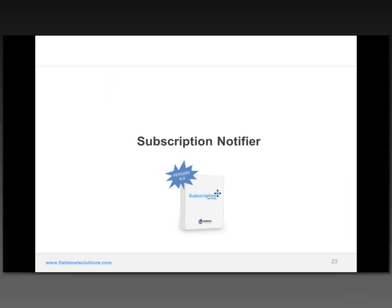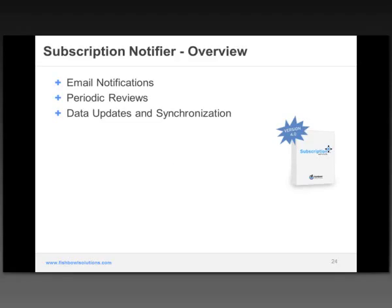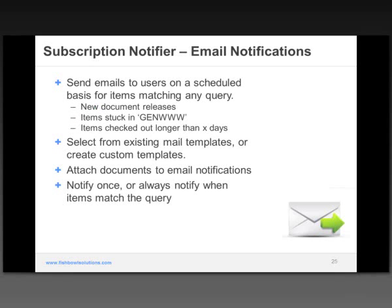The next component I'm going to talk about is Subscription Notifier. Subscription Notifier is really around sending email notifications for content that have either a normal review process or a periodic review process. It also has the ability to update external data sources or sync data between content server and external sources. From an email notification standpoint, emails can be sent to users on a scheduled basis for any piece of content matching the criteria.